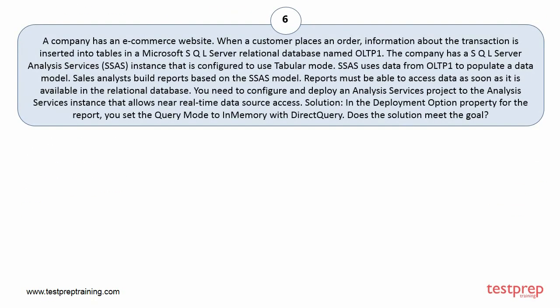Question number 6. A company has an e-commerce website. When a customer places an order, information about the transaction is inserted into tables in a Microsoft SQL Server relational database named OLTP1. The company has a SQL Server Analysis Services instance that is configured to use tabular mode. SSAS uses data from OLTP1 to populate a data model. Sales analysts build reports based on the SSAS model. Reports must be able to access data as soon as it is available in the relational database. You need to configure and deploy an Analysis Services project that allows near-real-time data source access.